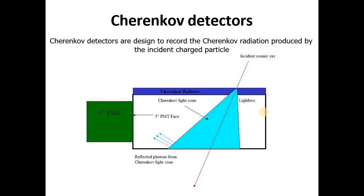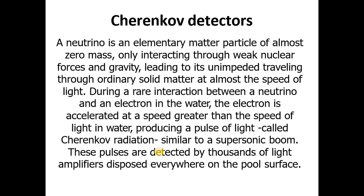Now what is Cherenkov detectors? Cherenkov detectors are designed to record these Cherenkov radiation produced by the incident charged particle. We have a Cherenkov radiator and light cone, incident cosmic rays, light works, and the reflected photons from Cherenkov light cone. A neutrino is basically an elementary matter particle of almost zero mass only interacting through weak nuclear forces and gravity, leading to its unimpeded traveling through ordinary solid matter at almost the speed of light. During a rare interaction between a neutrino and an electron in the water, the electron is accelerated at a speed greater than speed of light in water, producing a pulse of light called Cherenkov radiation which is similar to a supersonic boom. These pulses are then detected by thousands of light amplifiers disposed everywhere on the pool surface.